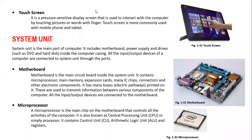If we talk about system unit, it is the CPU or the processor of the computer system. This system unit is the main part of the computer. It includes motherboard, power supply and drives such as DVD and hard disk inside the computer casing. All input and output devices of a computer are connected to the system unit through the ports.